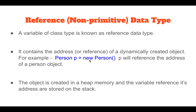When we have to create its object we simply use the new operator. This new operator creates the object and assigns its address to the variable P. So this object is created in the heap and its address is assigned. P refers to its address — P will reference the address of a person object. The actual object is created in heap memory and the variable reference and its address are stored on the stack.